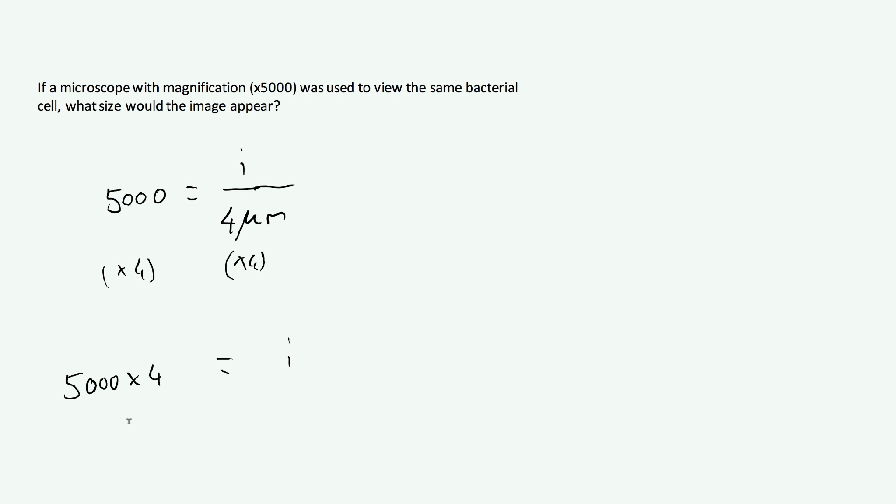Now, 5,000 times 4 is going to give me 20,000. Yep, notice that the 4 was 4 micrometres and 5,000 has no units. So it's just a number times by micrometres is going to give us micrometres. So our cell is going to appear on our paper as 20,000 micrometres.